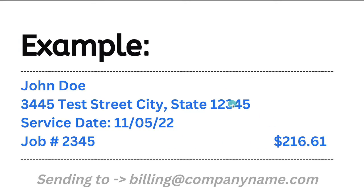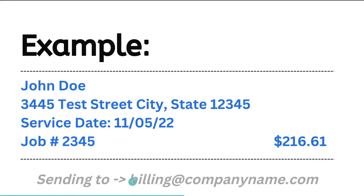You can have multiple line items on an invoice. The invoice software — Zoho in this case — will go ahead and total all of the line item totals and give you a grand total to send. Some companies are going to want you to send invoices to a certain email, such as accounting at company name dot com or billing at company name dot com. So make sure you clarify with them where the invoices need to be sent.